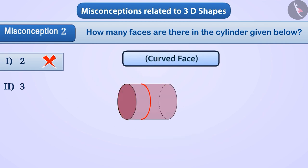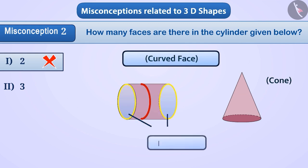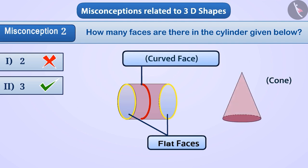The correct understanding is that there can also be a curved face. For example, the curved part of a cylinder or the curved part of a cone is also a face. Thus, the cylinder has a total of three faces: two flat faces and one curved face. That is, the correct answer is option 2. Can you tell how many faces there are in a cone?